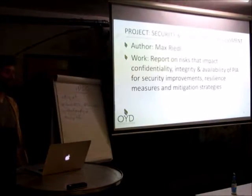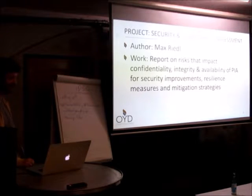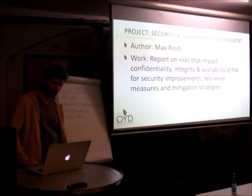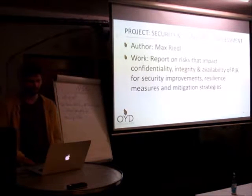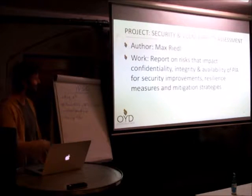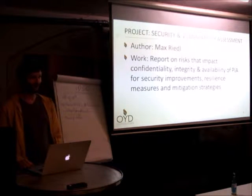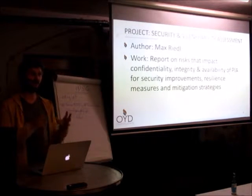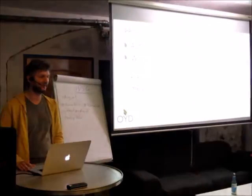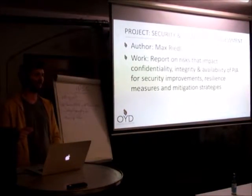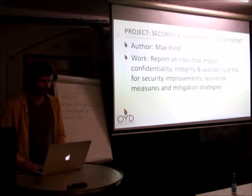Let's now go into the three projects we did over the course of the summer. The first one was from Max Riedel. Basically, he wrote a report on the risks that impact confidentiality, integrity, and availability of PEER — which stands for Personal Information Archive, what we now call the Data Vault — for security improvements, resilience measures, and mitigation strategies. This is a JHipster application currently — a Java application on top of a Postgres database — where you can store data in and read data out. And we just did a security and vulnerability assessment.